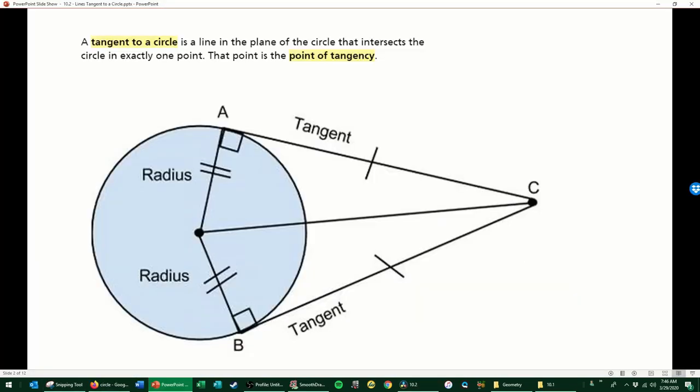Let's talk about this diagram. A tangent to a circle is a line in the plane of the circle that intersects the circle in exactly one point. That point where those two intersect is called the point of tangency. So A and B are both points of tangency, but line AC and line BC are tangent lines. The radius is always equal to every other radius in a circle, so the radii are always equal.